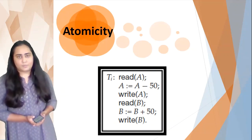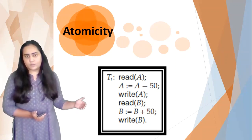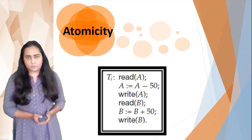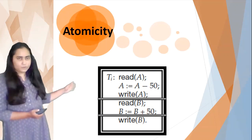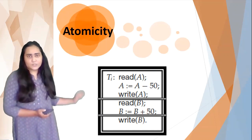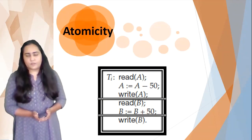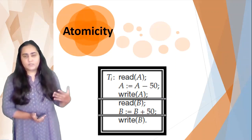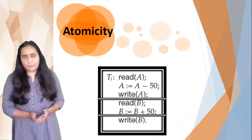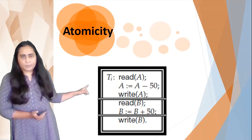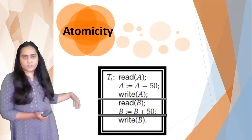Consider the same transaction T1, which transfers 50 from account A to account B. Now suppose in a certain area of the transaction, some failure occurs — it could be a software failure, hardware failure, or any type of failure. When this failure happens, the transaction stops mid-execution, perhaps after finishing the first three, four, or five operations.